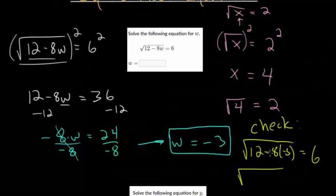When we simplify here, this becomes negative 8 times negative 3, which is positive 24. So 12 plus 24 is 36. It's true that the square root of 36 is 6. So this makes sense. W does equal negative 3. We didn't end up with something that wasn't true, so we can put negative 3 as our answer.